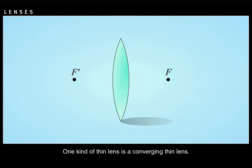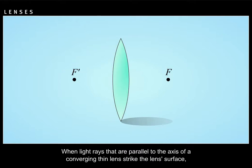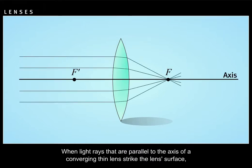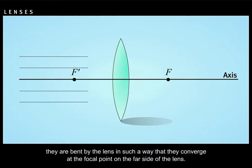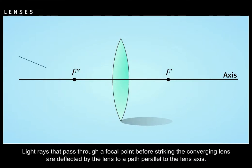One kind of thin lens is a converging thin lens. When light rays that are parallel to the axis of a converging thin lens strike the lens surface, they are bent by the lens in such a way that they converge and focus on the far side of the lens. Light rays that pass through a focal point before striking the converging lens are deflected by the lens to a path parallel to the lens axis.